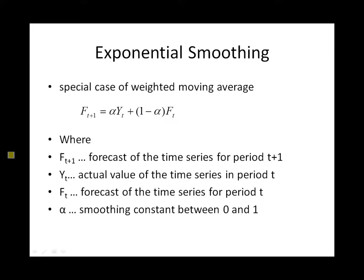In this tutorial I will demonstrate the use of the exponential smoothing function in Excel and how it can be used in forecasting. Exponential smoothing is a special case of weighted moving average where we forecast the future period based on the current period actual figures and current period forecast. We will use coefficient alpha, which is called the smoothing constant, which has values between 0 and 1.